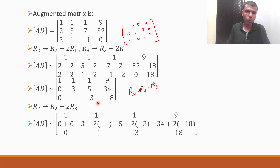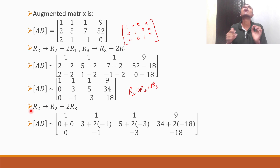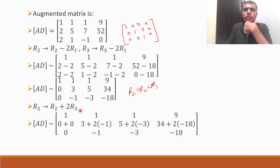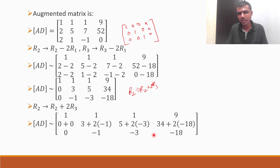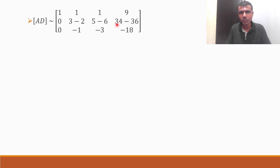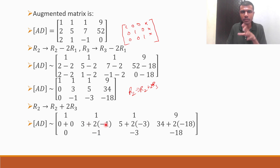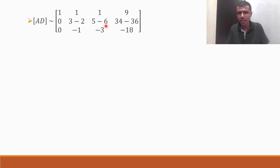R2 ← R2 + 2R3: only R2 changes. So: 0+2·0=0, 3+2·(−1)=1, 5+2·(−3)=−1, 34+2·(−18)=−2. After simplifying: R2 becomes 0, 1, −1, −2. The operation applies to the entire row, although we focused on making the center element 1.